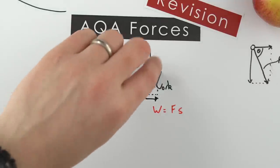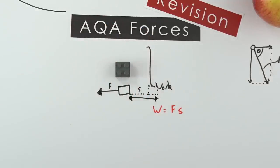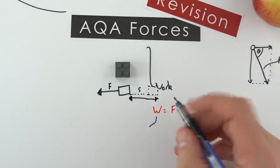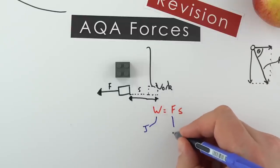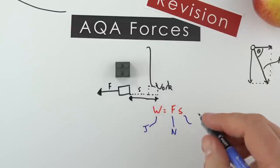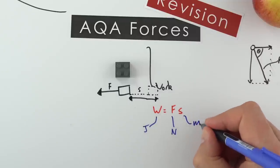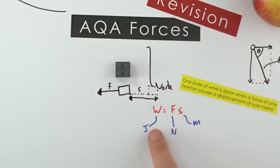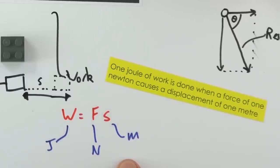Work done and energy transferred are both measured in Joules. Force is measured in Newtons and displacement — the distance travelled in the direction of the force — is measured in metres. This gives us the definition of one Joule: the work done when a force of one Newton causes a displacement of one metre.